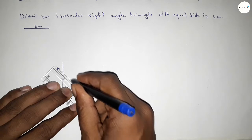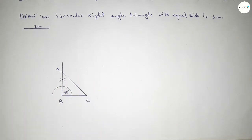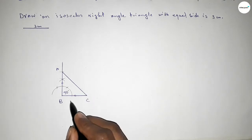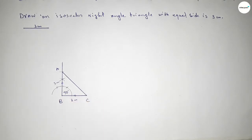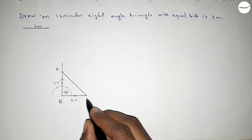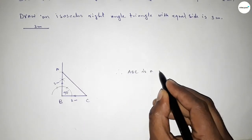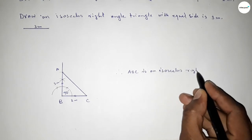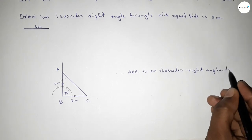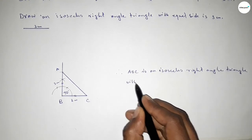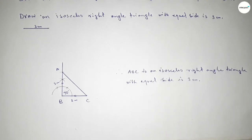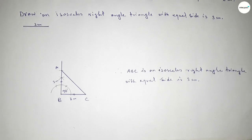Now joining A and C to get the isosceles right angle triangle. This side and this side are equal — this is three centimeters and this is also three centimeters. Therefore triangle ABC is an isosceles right angle triangle with two equal sides of three centimeters. This is the process to construct an isosceles right angle triangle. That's all, thanks for watching. If this video is helpful to you, please share it with your friends.